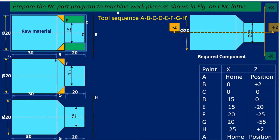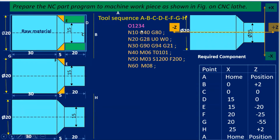The coordinate system is very important; otherwise you will not get the proper profile of the job. Once you have decided the tool sequence, it is easy to write the coordinates. Every CNC program is divided into three parts: the start of the program, the profile of the component, and the end of the program.